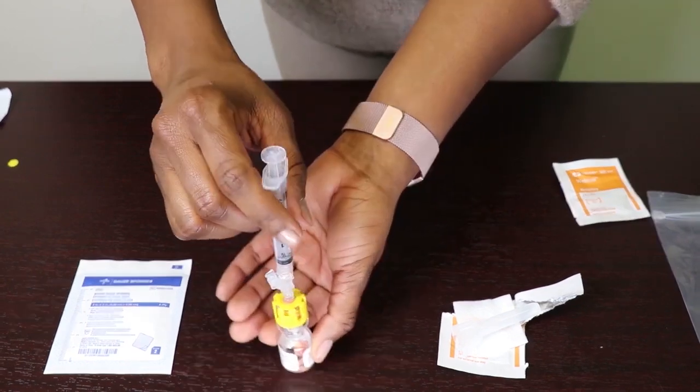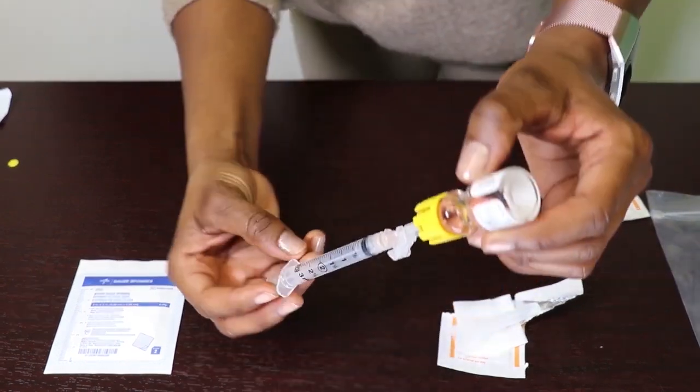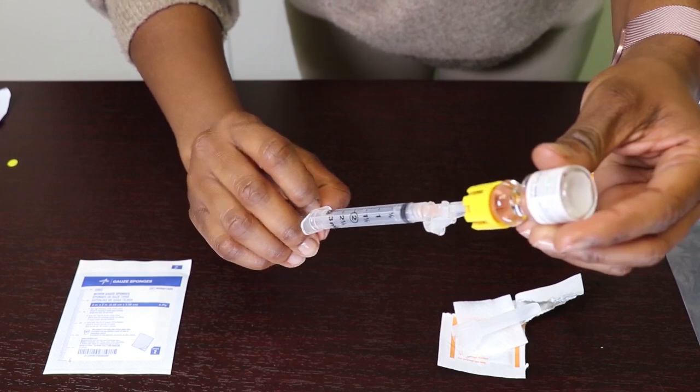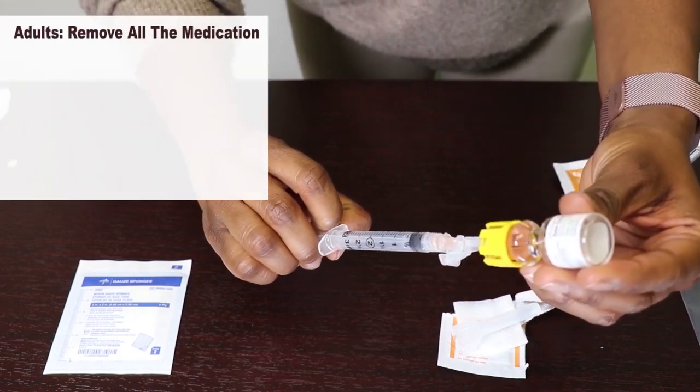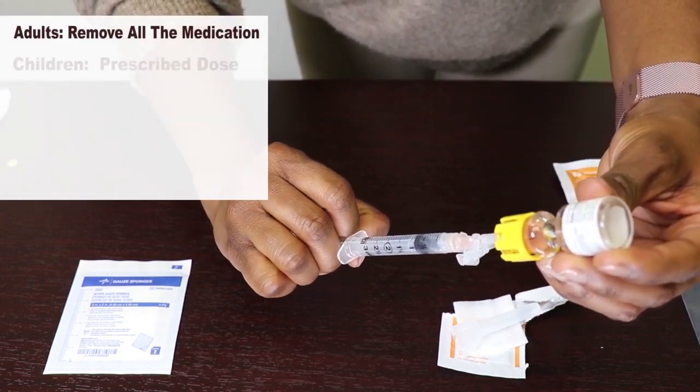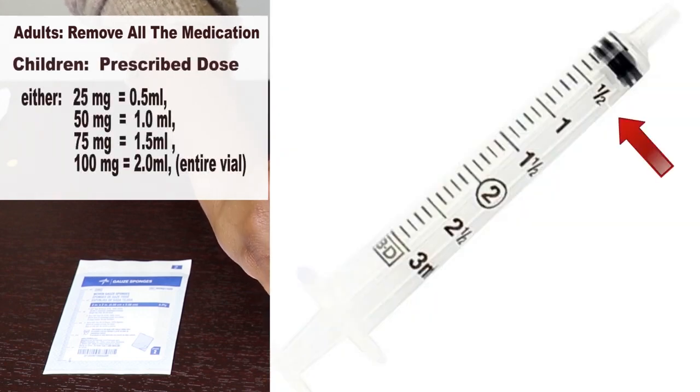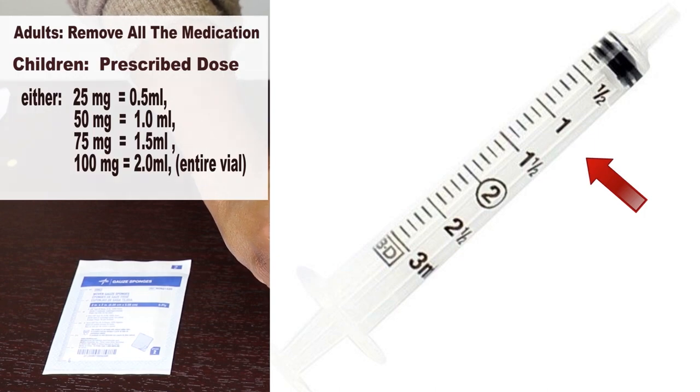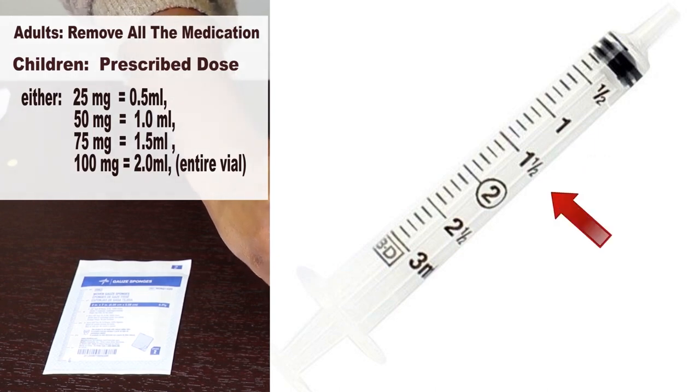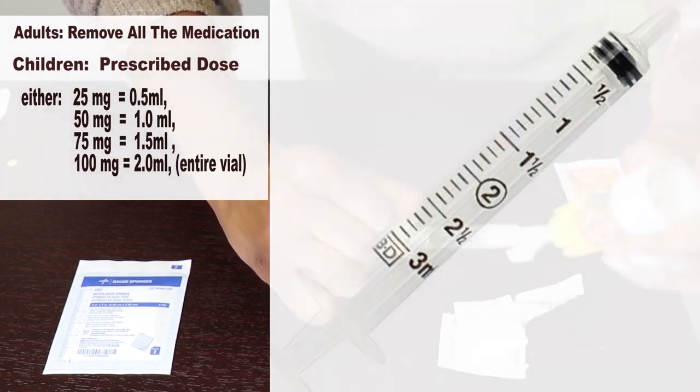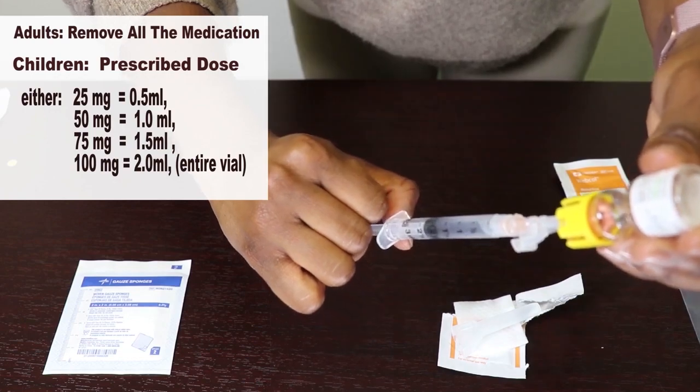Turn the vial upside down and gently pull back on the plunger to draw the medication into the syringe. For adults, you will remove all the medication in the vial. For children, your child's health care provider prescribed a dose either 0.5 mls 25 mg, 1 mL 50 mg, 1.5 mL 75 mg, or 2 mL 100 mg the entire vial.